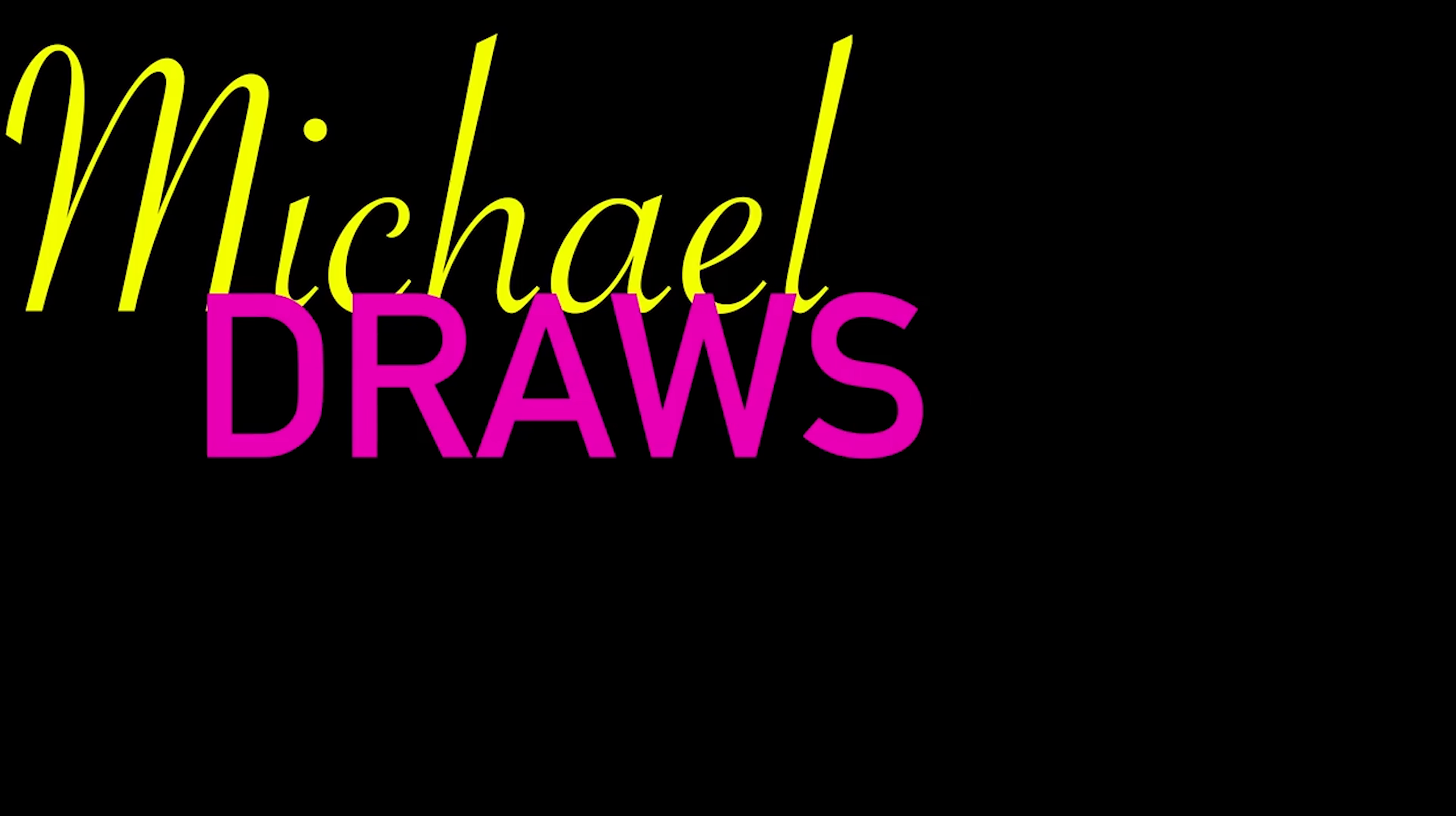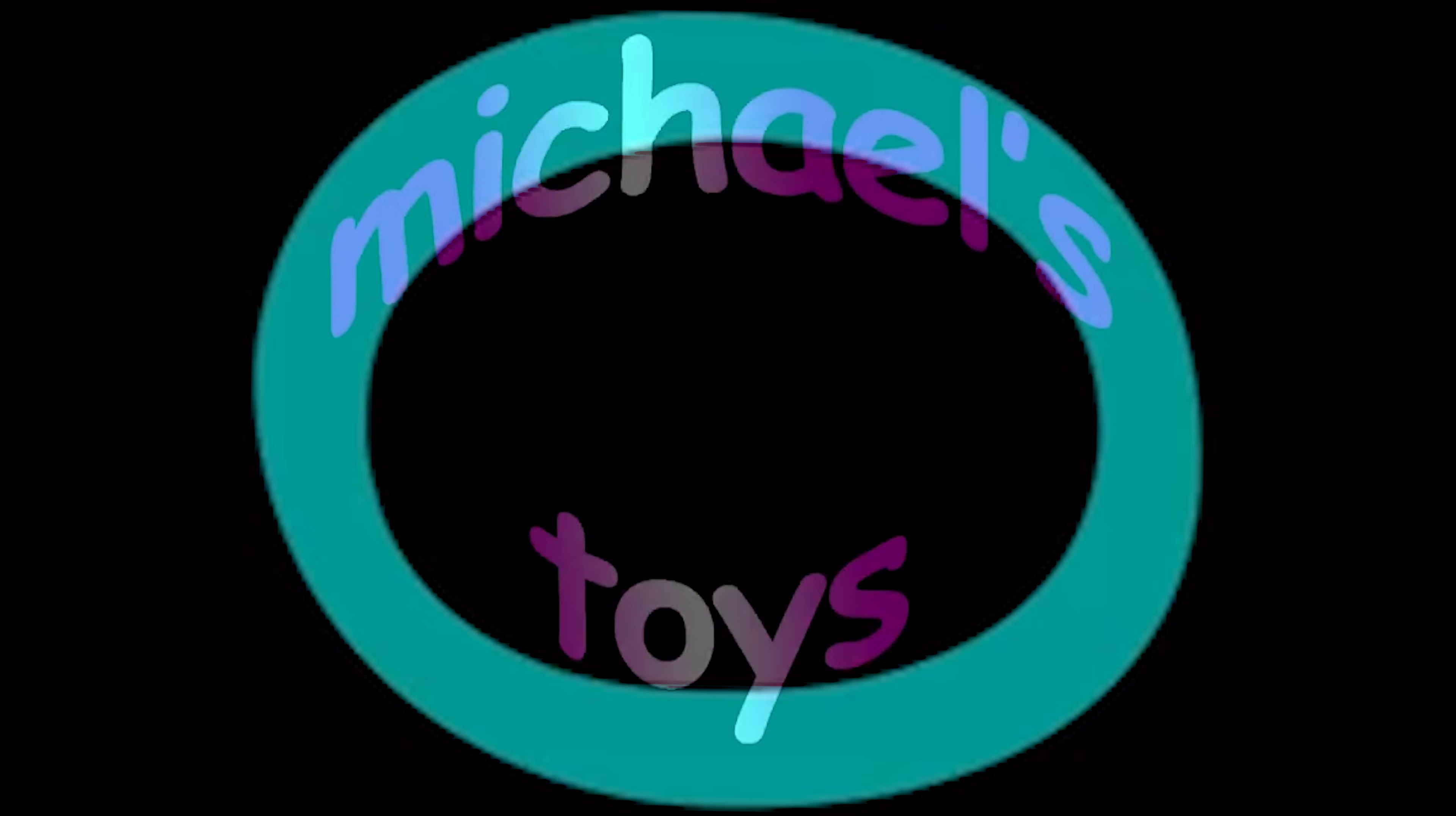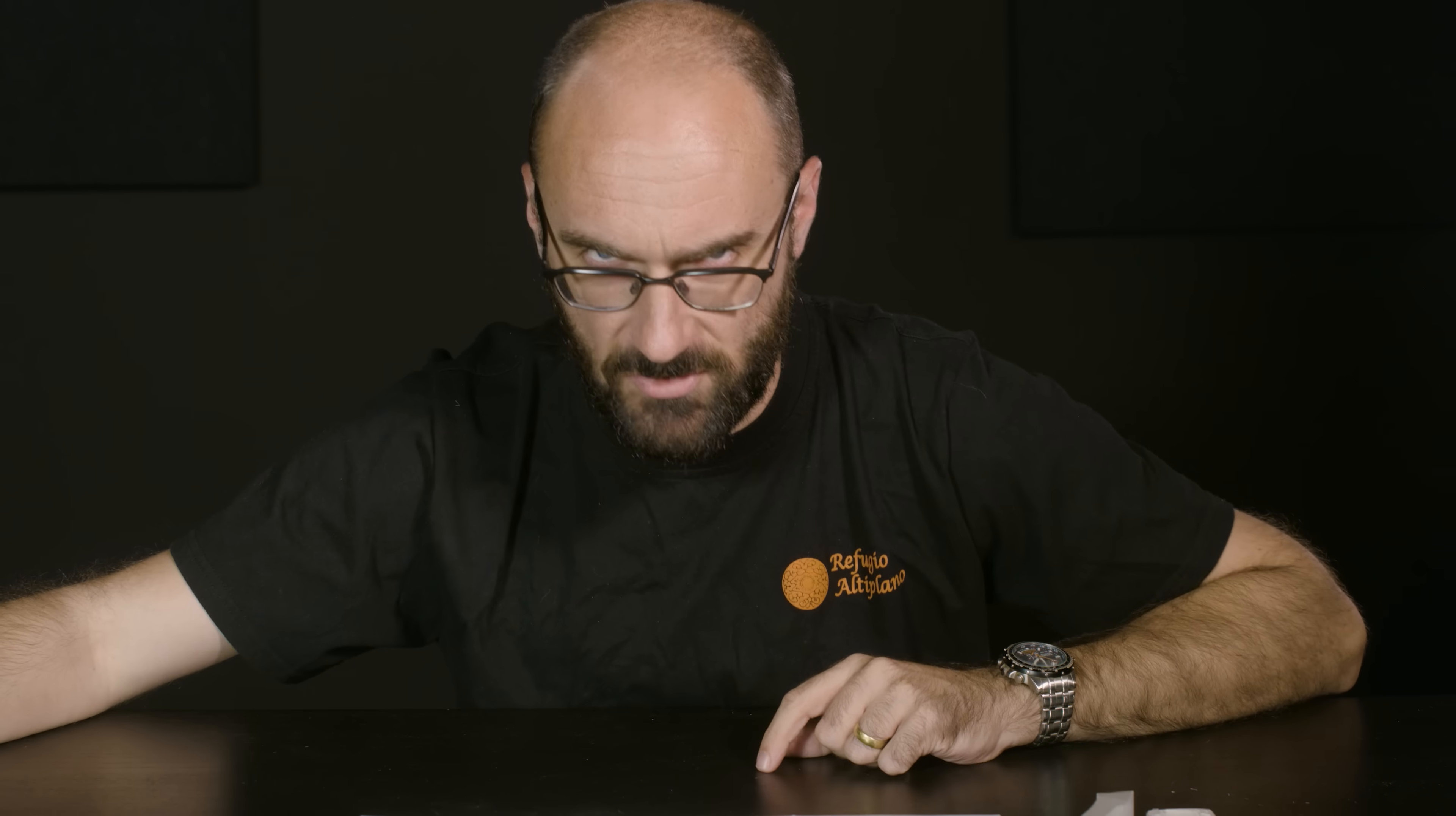Welcome to another episode of Michael Draws on Pieces of White Cardstock meets Michael's toys. That's right, today we have a combo episode for you and we're going to be talking about vision. We're going to be talking about how images are made.